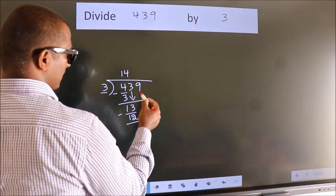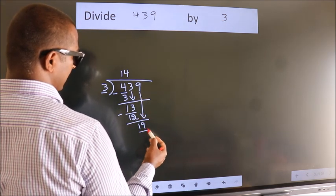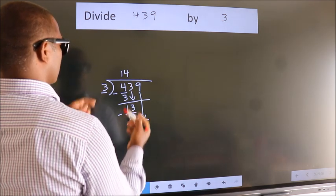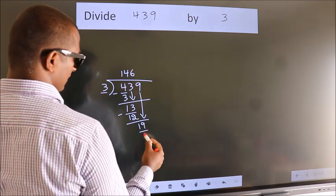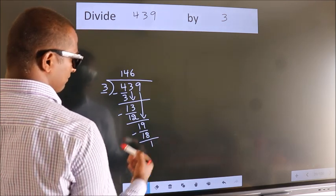After this, bring down the beside number. So, 9 down. So, 19. A number close to 19 in 3 table is 3 sixes, 18. Now we subtract. We get 1.